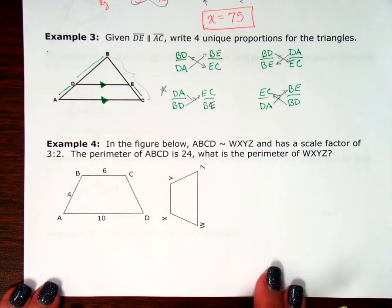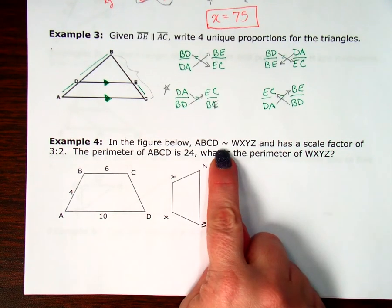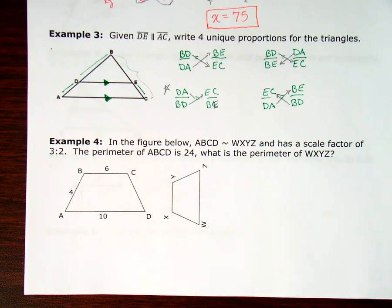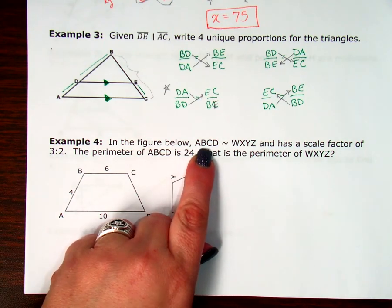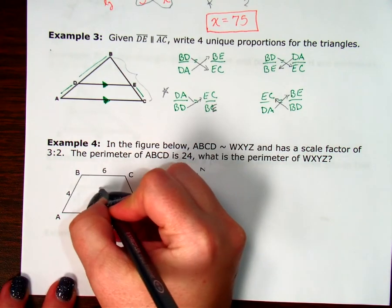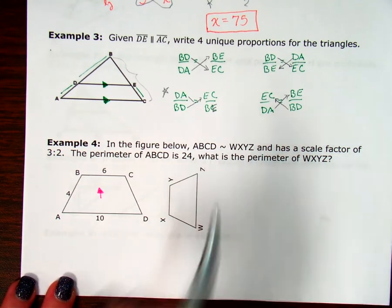Let's look at number 4. In the figure below, ABCD is similar to WXYZ and has a scale factor of 3 to 2. The perimeter of ABCD is 24. What is the perimeter of WXYZ? So here we have yet another perimeter problem. When I look here, it tells me my similarity statement. ABCD comes first. So that is going to go always in the top of my fraction.